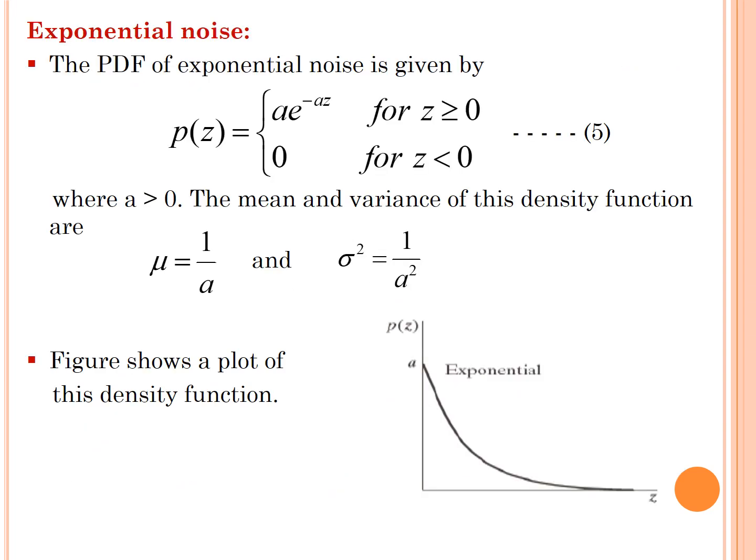Exponential noise. The PDF of exponential noise is given by p(z) = ae^(-az) for z ≥ 0, otherwise it is 0 for z < 0, where a > 0. The mean and variance of this density function are μ = 1/a and σ² = 1/a². Here the figure shows a plot of this density function.